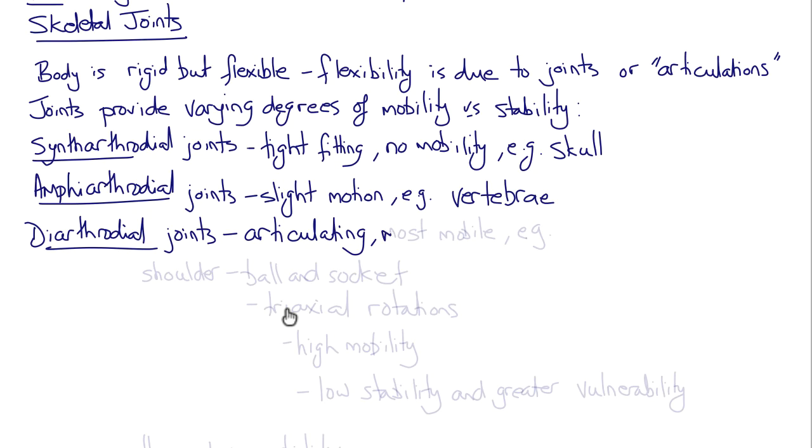And then there are diarthrodial joints that are the articulating joints that have the most mobility and include the shoulder joint, which is a ball and socket joint allowing tri-axial rotations and high mobility, but therefore suffer from lower stability and greater vulnerability to injury.